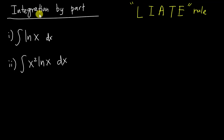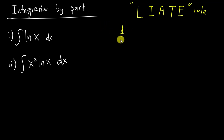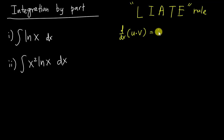Today let's discuss integration by parts. The integration by parts formula actually comes from the product rule. The product rule tells you that if you differentiate u multiplied by v, you get u differentiate v plus v differentiate u.